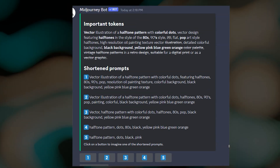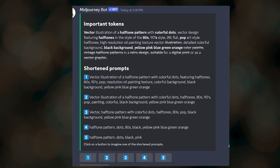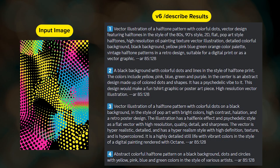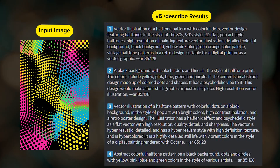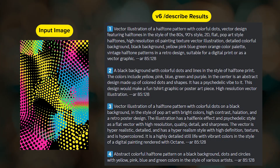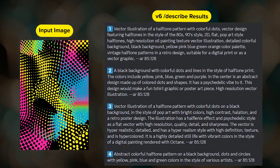Don't forget that you can use the shorten command to identify important words or phrases from Describe's results, or for any prompt you're working on. These tools may not give you exact solutions but they are meant to help you through the prompting process. If you'd like a deep dive video on the Describe feature or a comparison to other image-to-text tools, let me know in the comments.